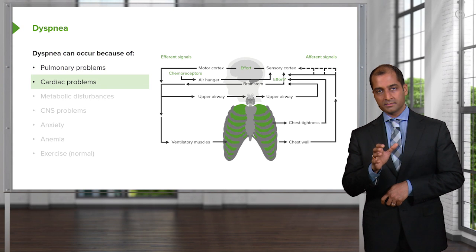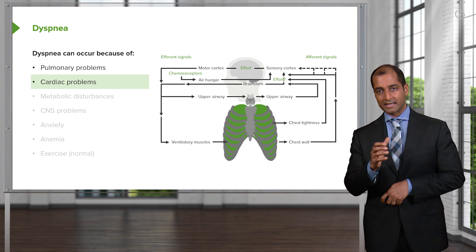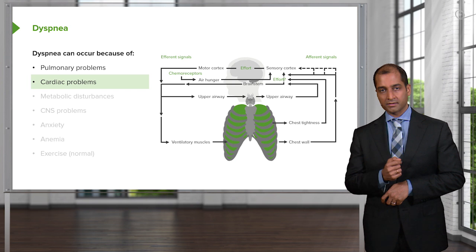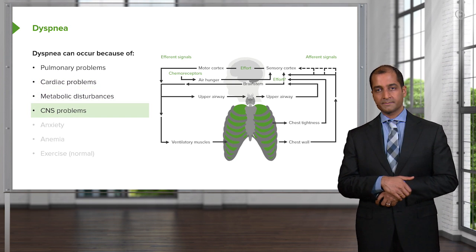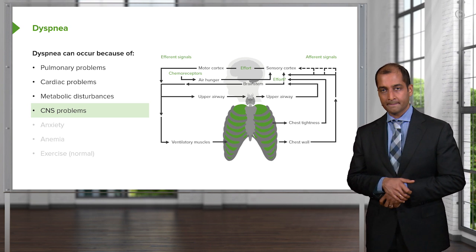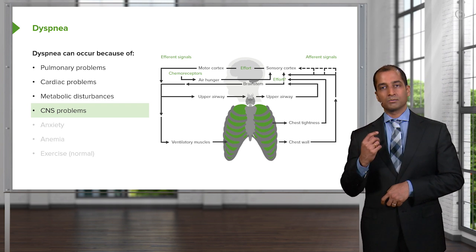Pulmonary problems — dyspnea. Cardiac problems — we just talked about this. Pulmonary problems may result in edema: exudate, because of increased capillary permeability. Cardiogenic could result in dyspnea — for example, left-sided heart failure, mitral stenosis. Metabolic disturbances. What about the medulla? What if the individual was taking an opioid — a narcotic? The respiratory center in the medulla has been knocked out.